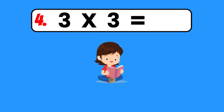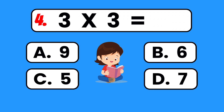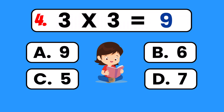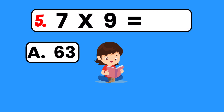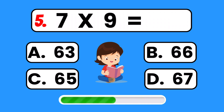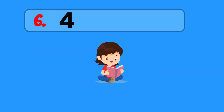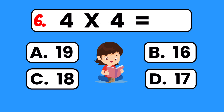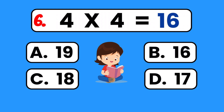3 x 3 equals... 9. 7 times 9 equals... 63. 4 times 4 equals... 16.